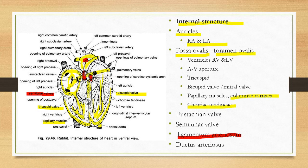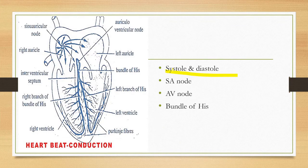This is the internal structure of the heart. Now let's look at the working of the heart. There are two processes: systole and diastole. Systole means contraction and diastole means relaxation.